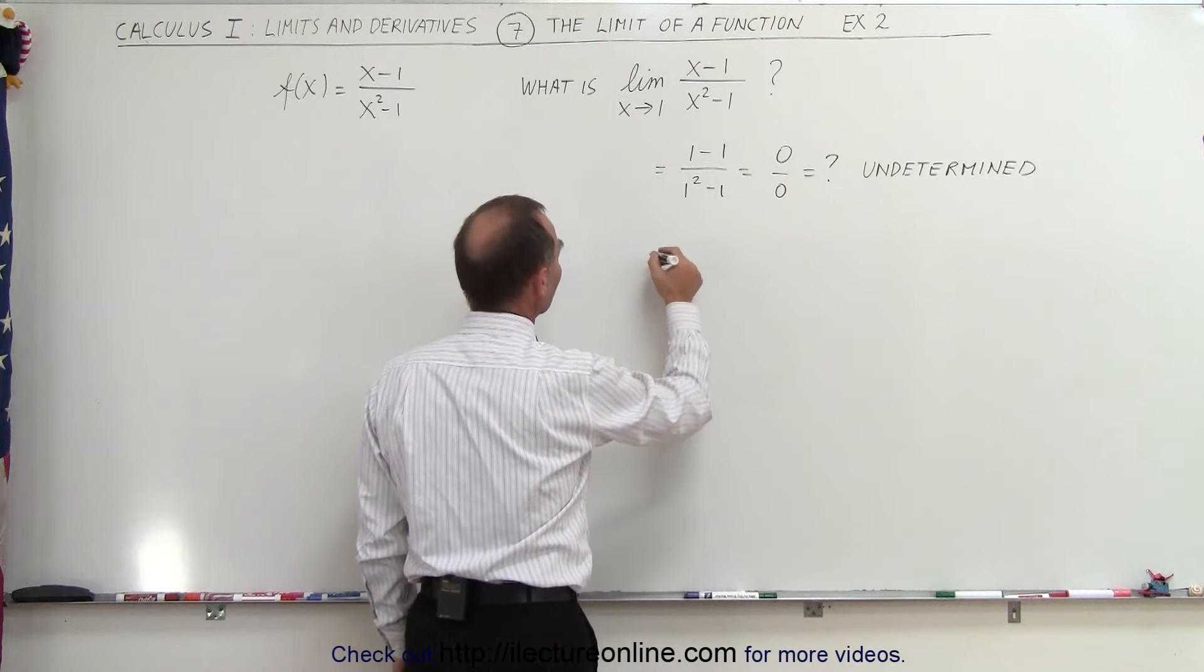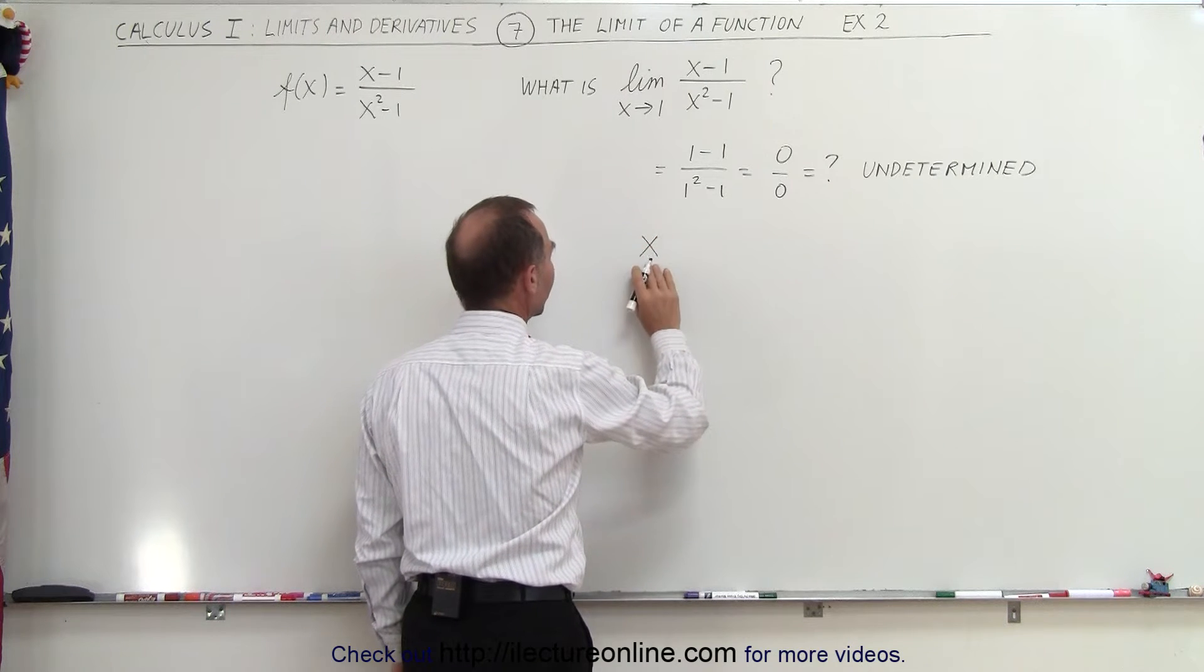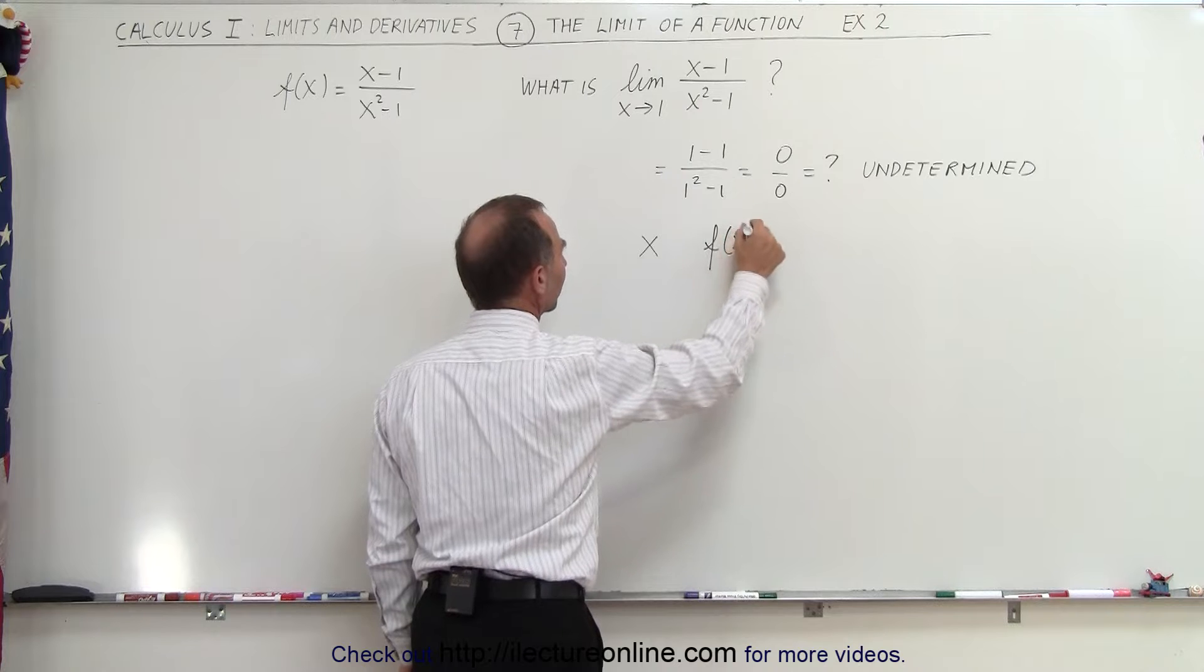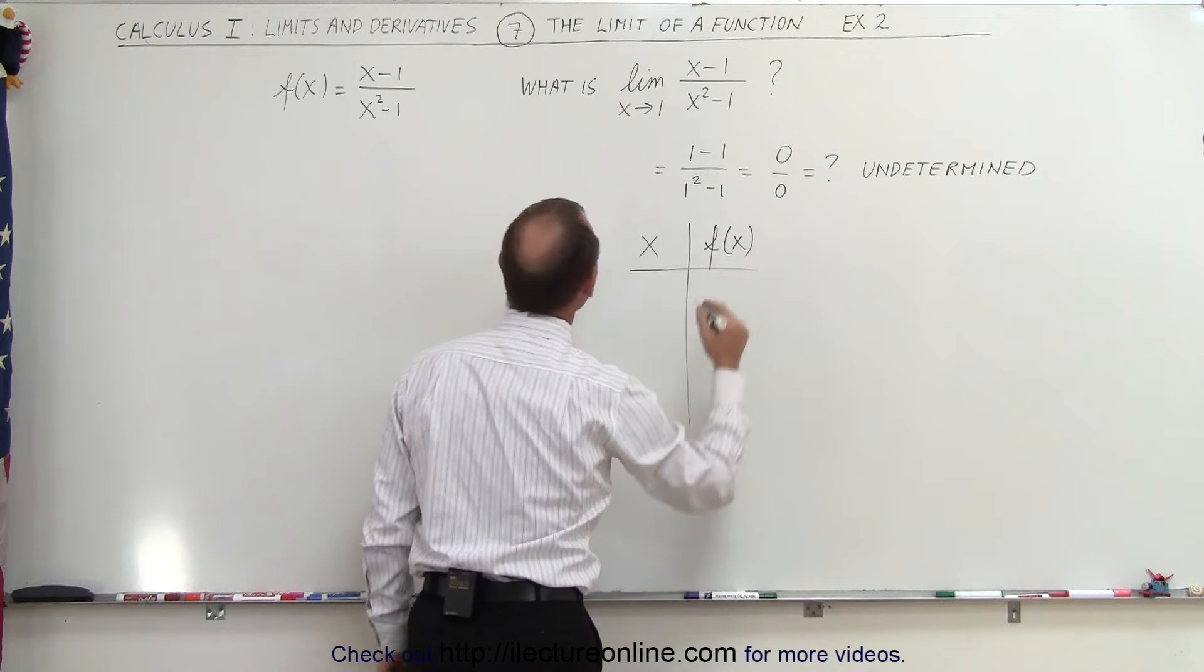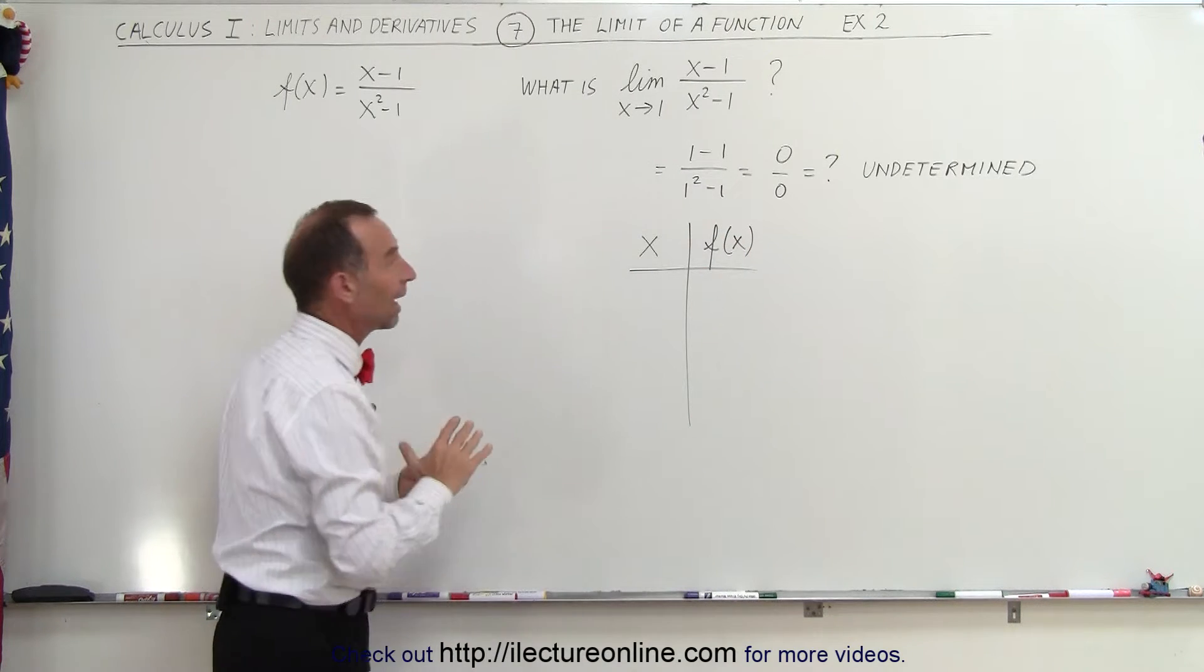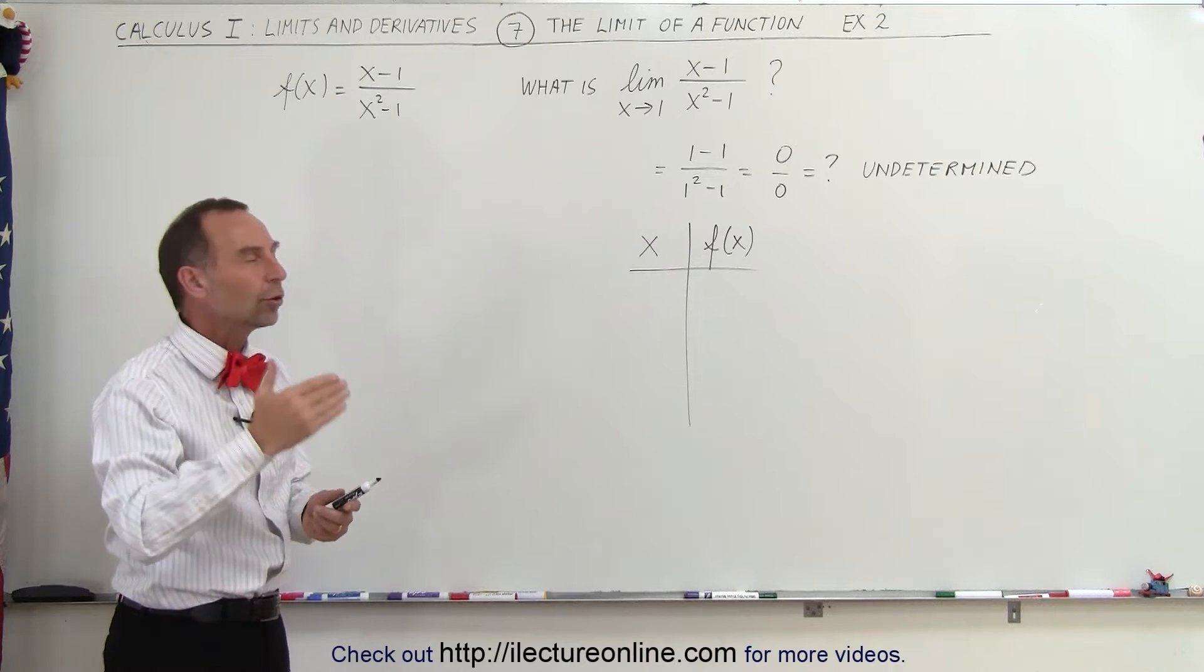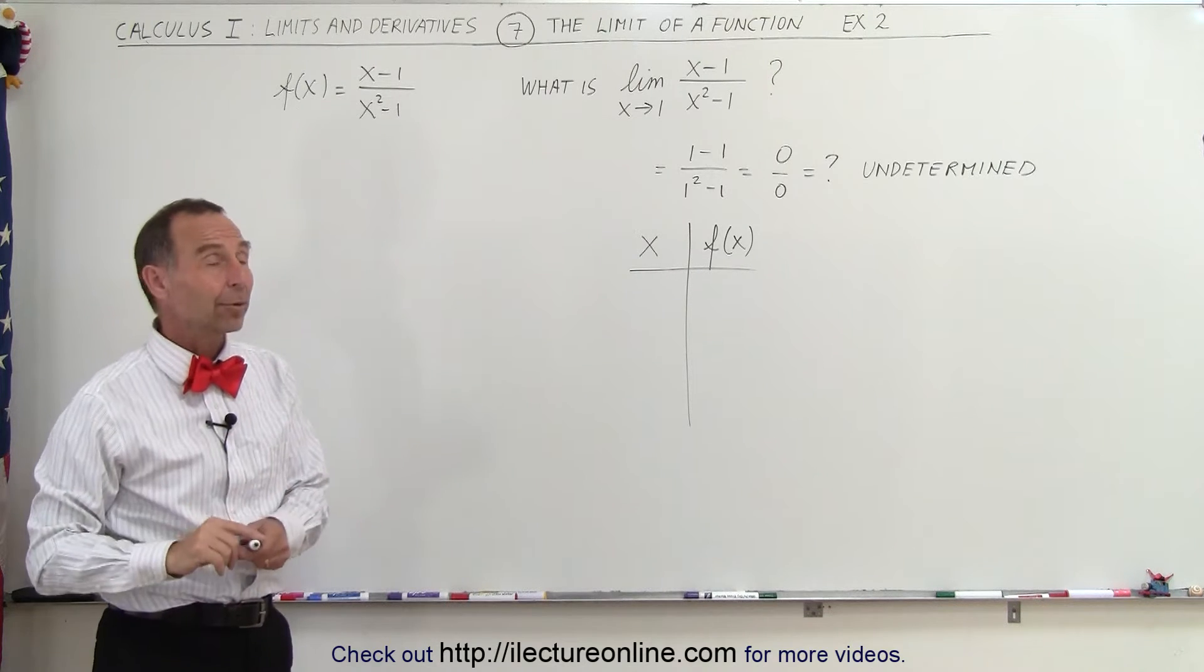We're going to plug in some values in the table. We're going to find some values for x, and we're then going to find the corresponding values for the function of x. And what we're going to do is we're going to pick values and let them get closer and closer and closer to 1 to see what will happen to f of x.